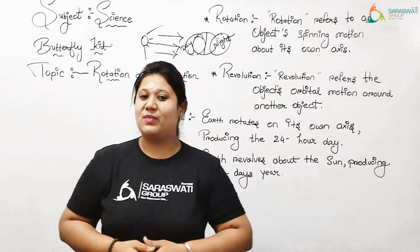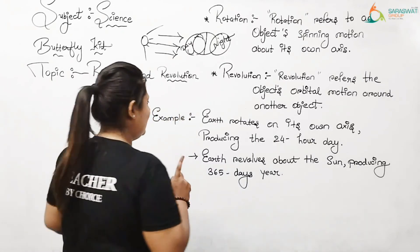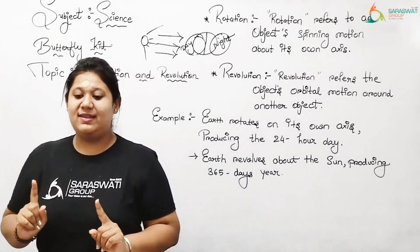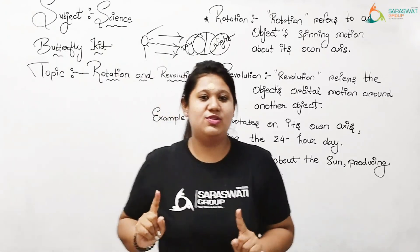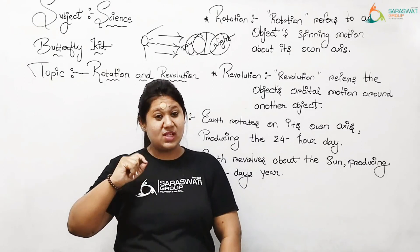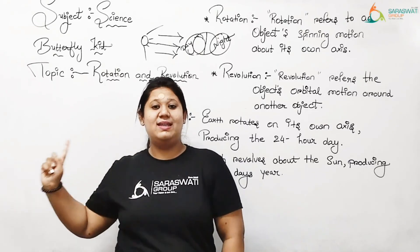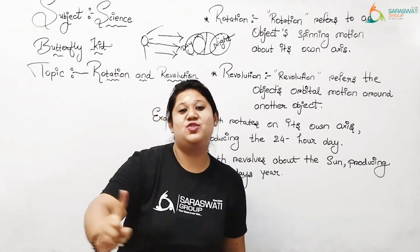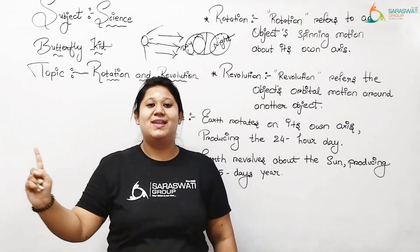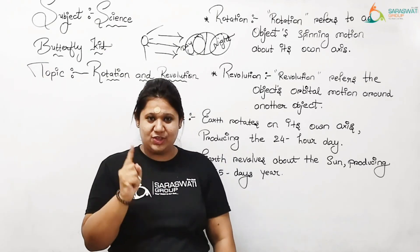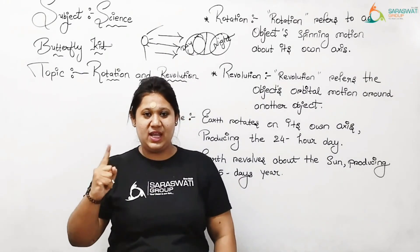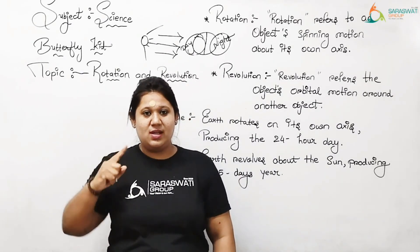This is called rotation — spinning at your own place. And this is called revolution — moving around the sun. Do it with me: rotation, revolution. Don't get confused between rotation and revolution.